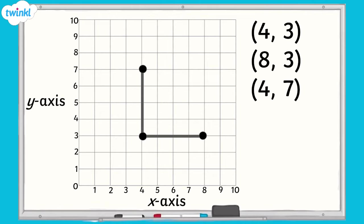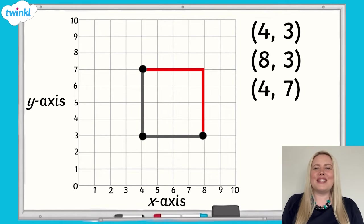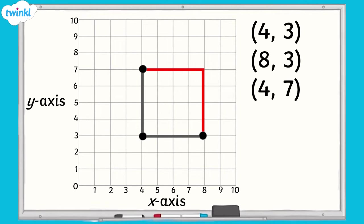One thing we know about squares is that all their sides are of equal length. So if we complete our square by drawing in the remaining lines, it will look like this. Can you see how each of the points forms one of the vertices of the square? Where will the missing point be for the final vertex of the square? The missing point will be here at 8, 7.